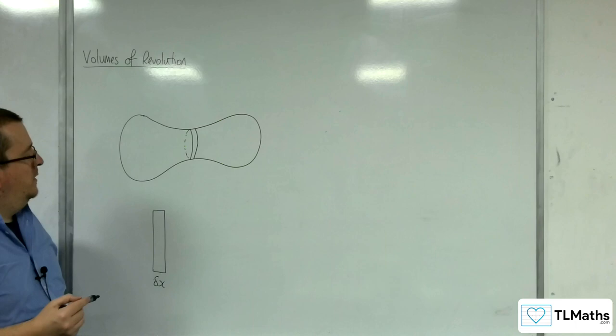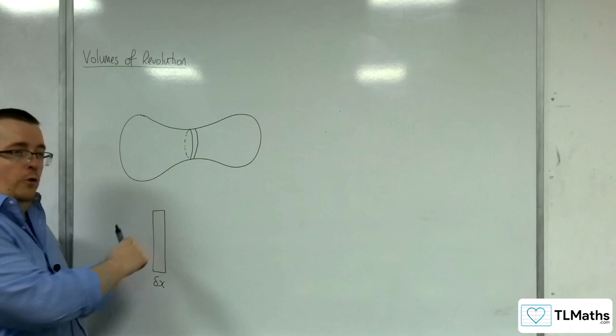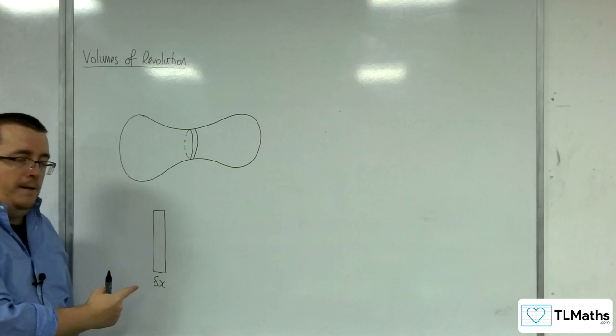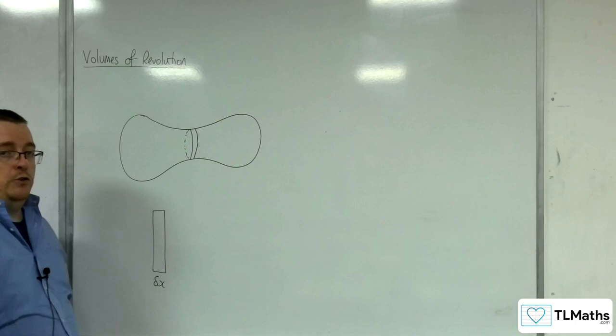Right. Then, if I wanted to find the volume of this cylinder, I would get the area of the cross section, which is a circle. So the area of the circle is pi r squared. And then multiply it by delta x. And that would be the volume of my cylinder.